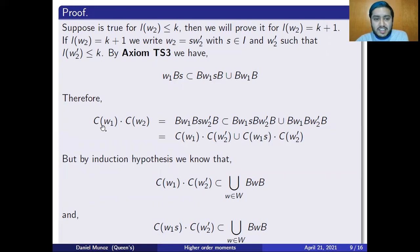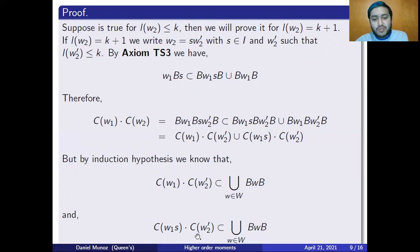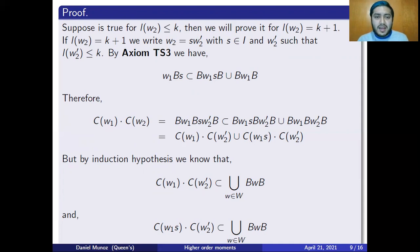Noting that BW1B is C(W1), BW2'B is C(W2'), BW1SB is C(W1S), I get that C(W1) times C(W2) is contained in the union of C(W1) · C(W2') and C(W1S) · C(W2'). Then using the induction hypothesis, since the length of W2' is at most K, I have that both products are contained in the union of the double cosets. Therefore C(W1) times C(W2) is contained in the union of the double cosets, proving the union is closed under multiplication and finishing the induction.